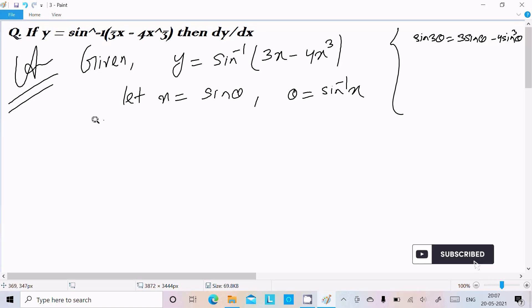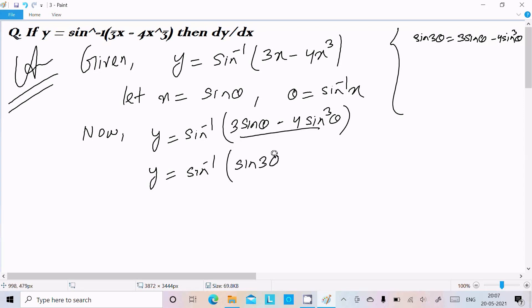Now we can write y = sin⁻¹(3 sin θ - 4 sin³θ). After substituting, we can write sin 3θ. So y = sin⁻¹(sin 3θ).